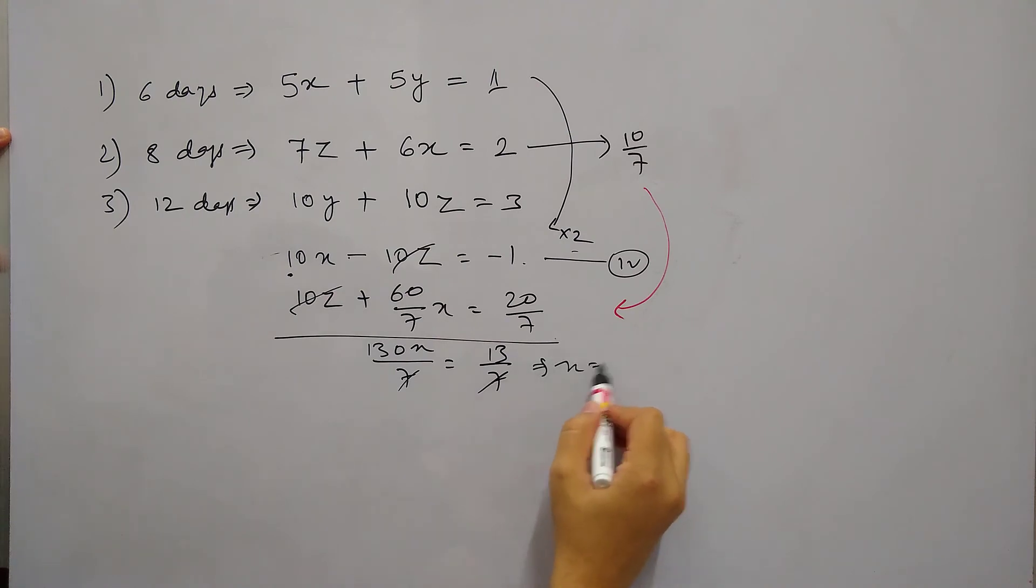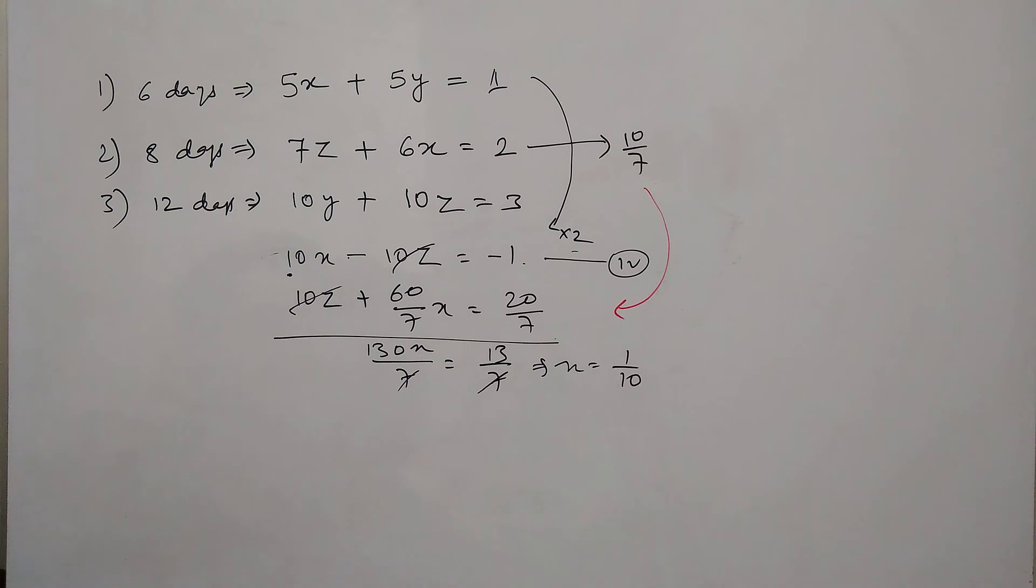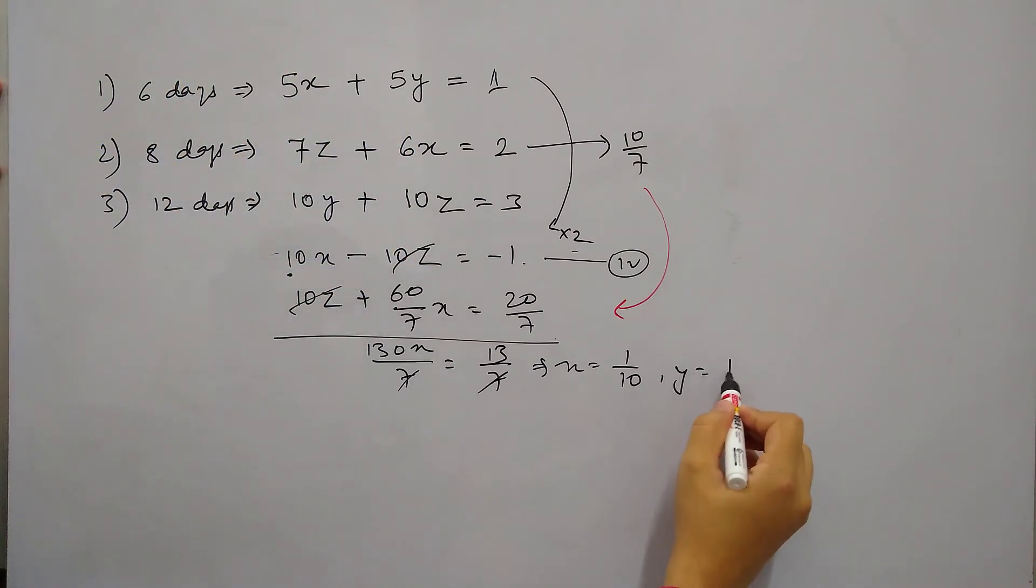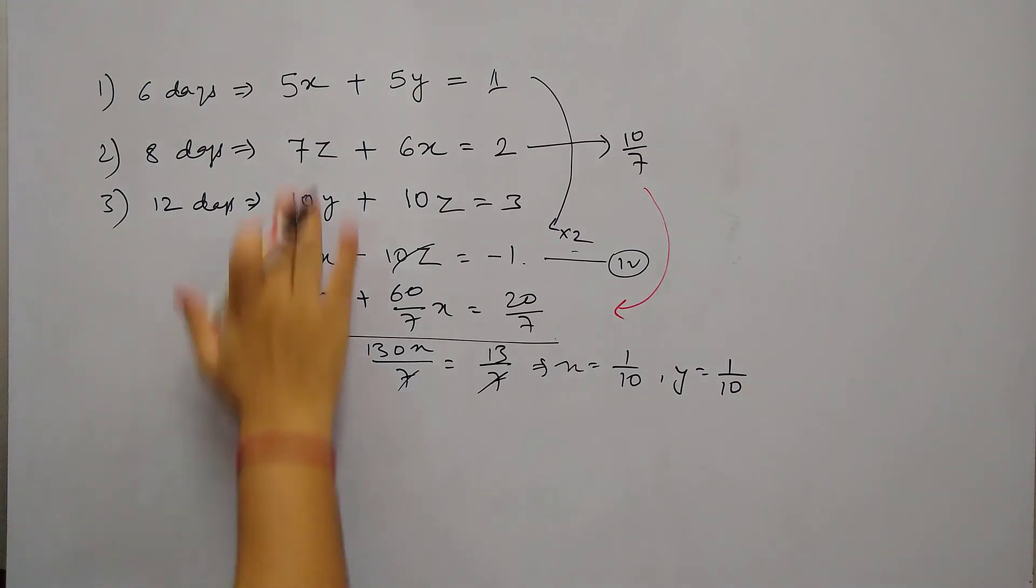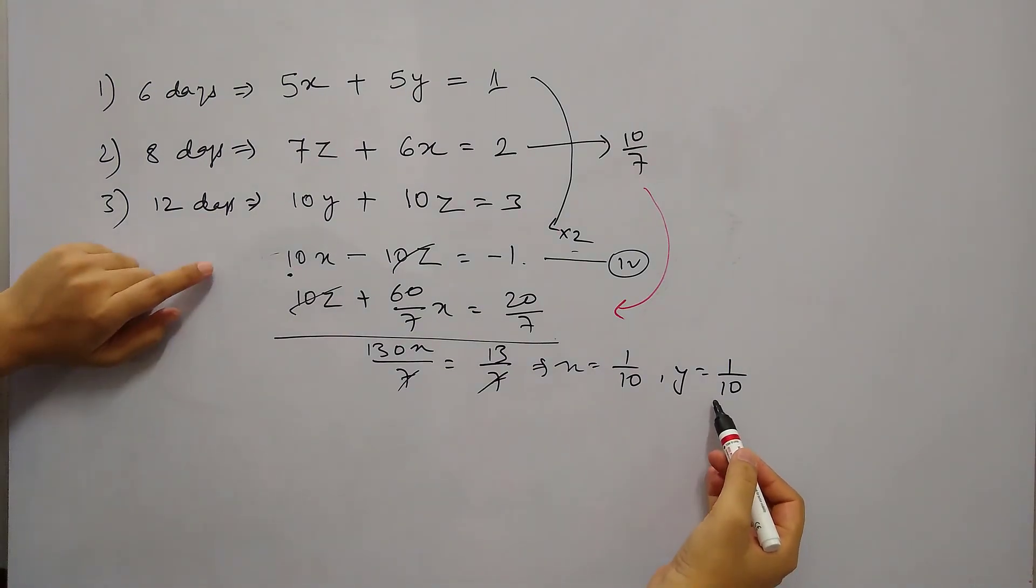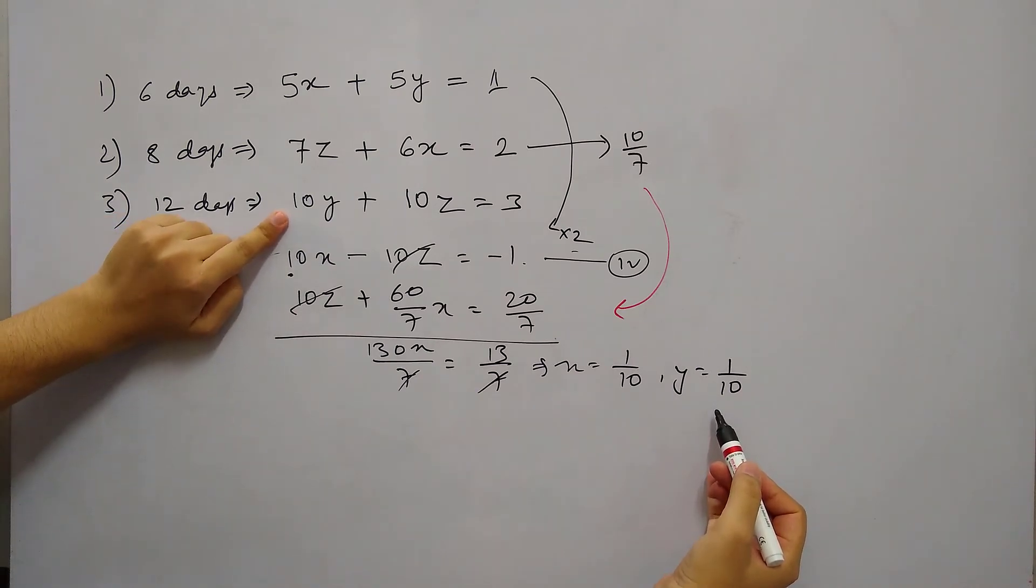Or X will be 1 by 10. So value of X is 1 by 10. And from equation 1 we can see X and Y are equal. So value of Y will also be 1 by 10. Because equal part of them is making 1, so X and Y are same. So Y will be 1 by 10. And now if we put the value of Y equals to 1 by 10 in the third equation,